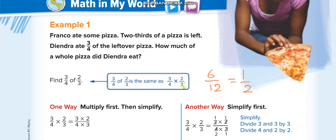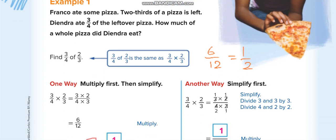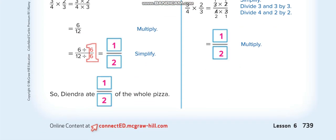3 times 2 equals 6, 4 times 3 equals 12. Then you simplify: 6/12 divided by 6 up and down equals 1/2. So Diendra ate half of a whole pizza.